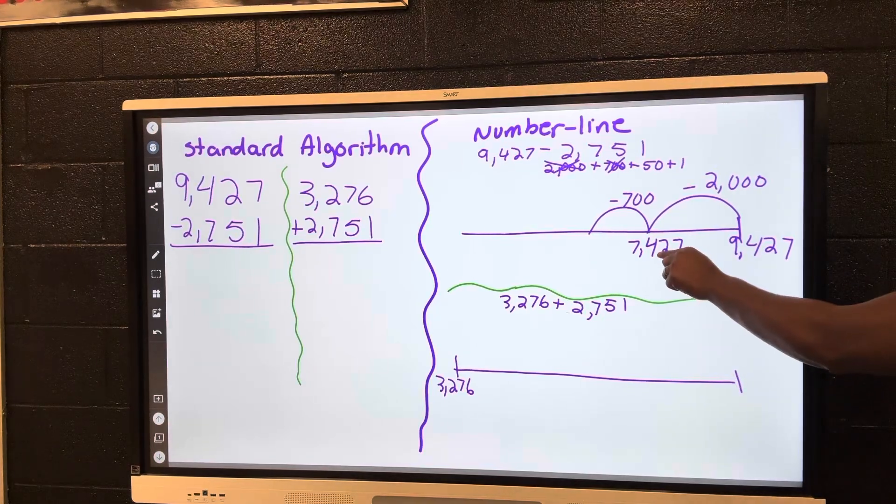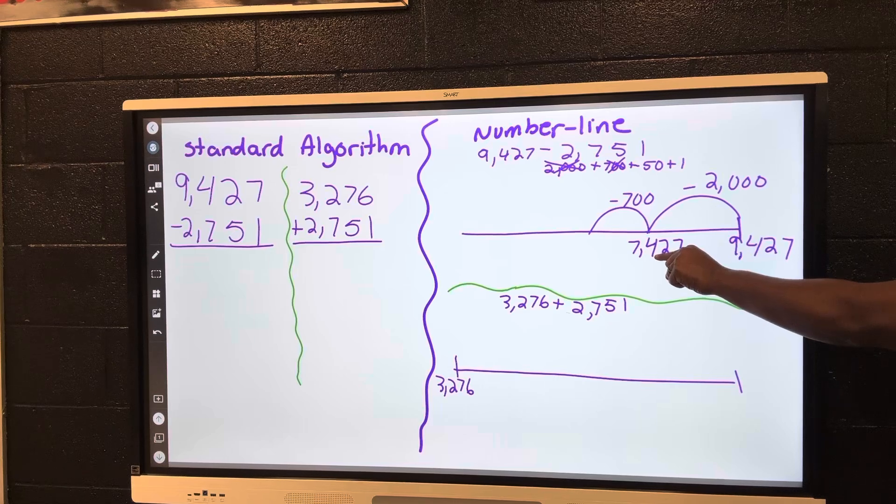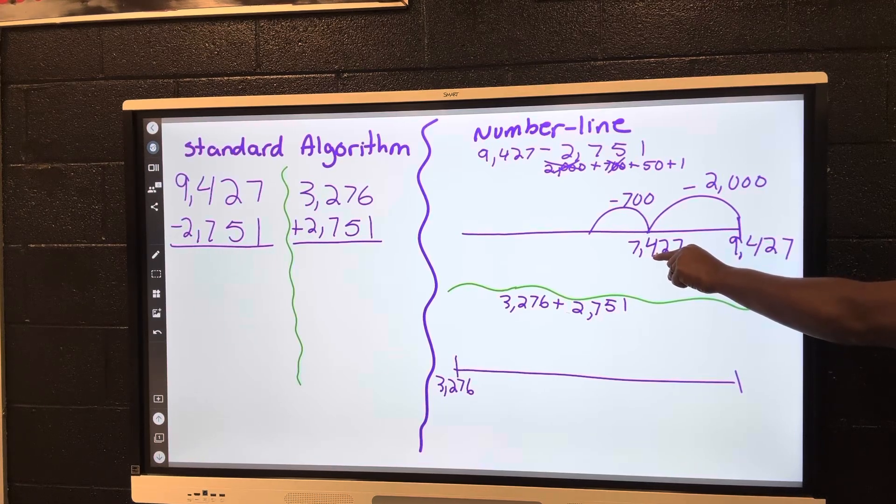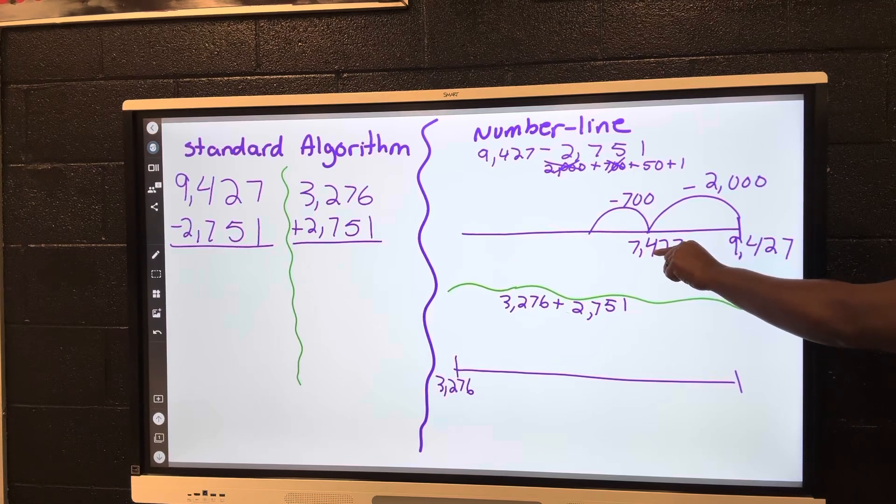So we have to take away 700 from the hundreds place, but as we see, it's only 400 there, so you're going to have to end up borrowing. So what we're going to do is we're going to count down: 400, 327, 227, 127. Now we're at 6,927, 6,827, 6,727.